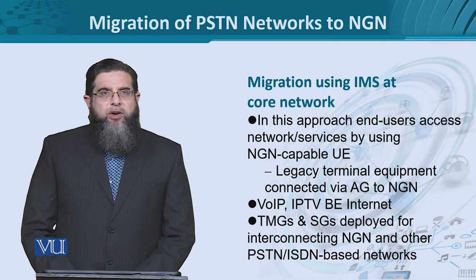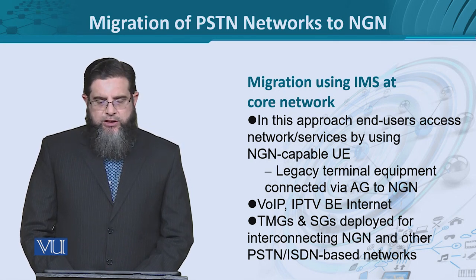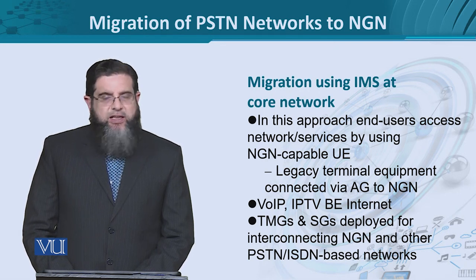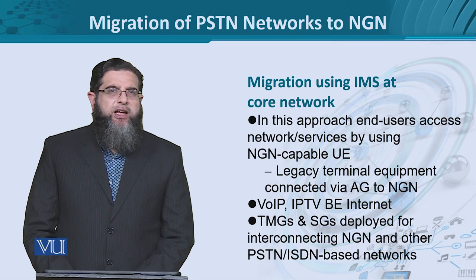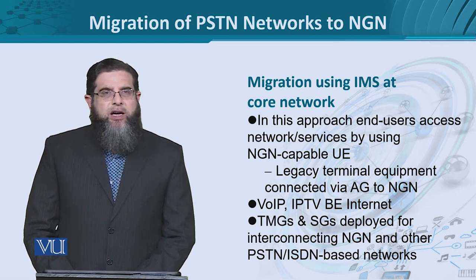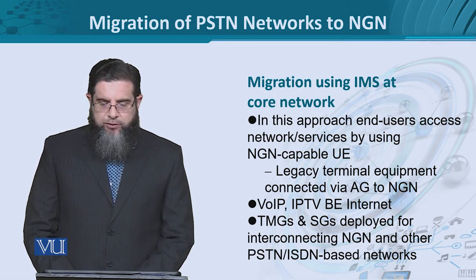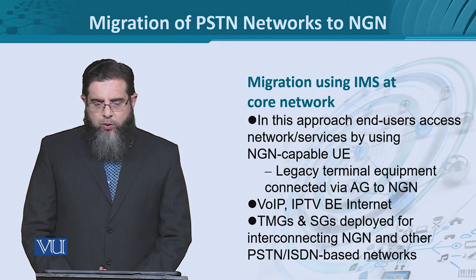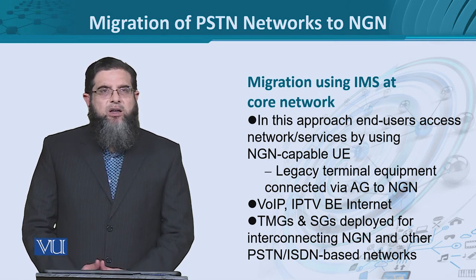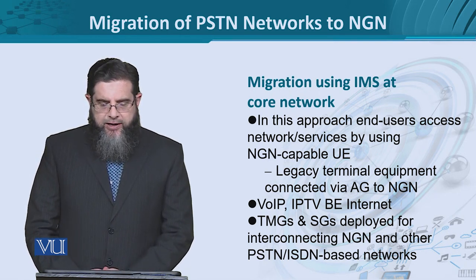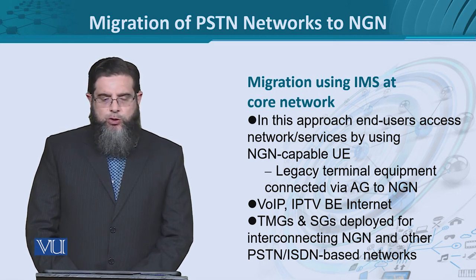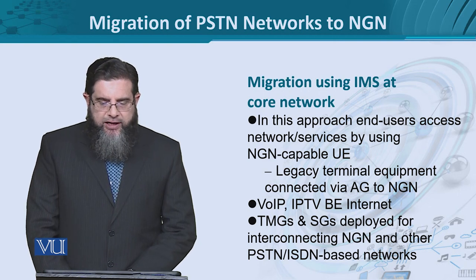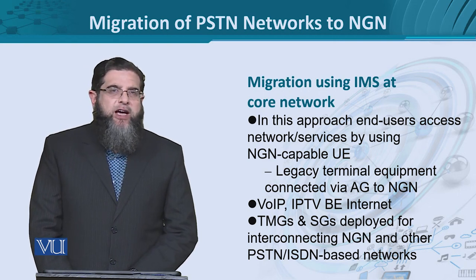The trunking media gateways, which carry not only voice but multimedia traffic, and the signaling gateways — implementing part of the SS7 overlay signaling network functionality — are deployed for interconnecting the NGN with classical PSTN or ISDN-based networks. This allows coexistence and backward compatibility of the migrated part of the entire network.